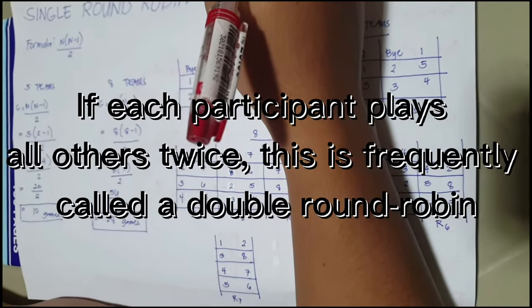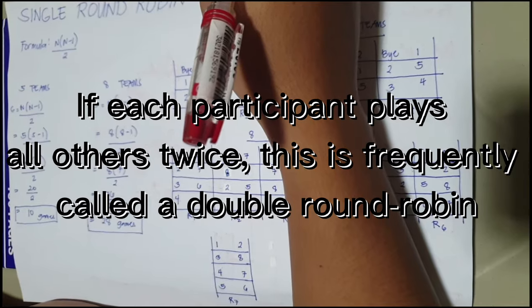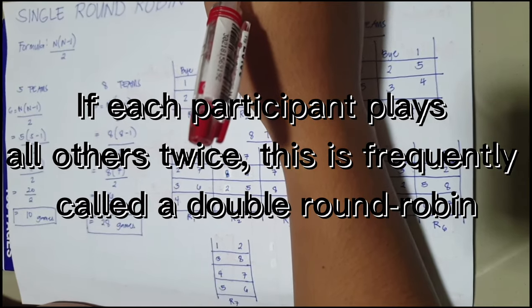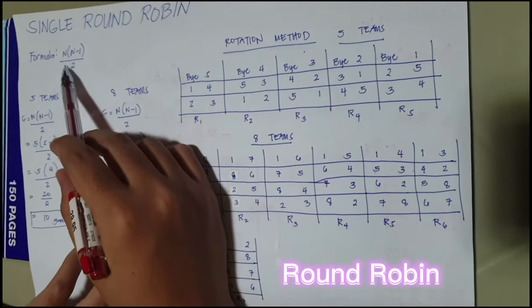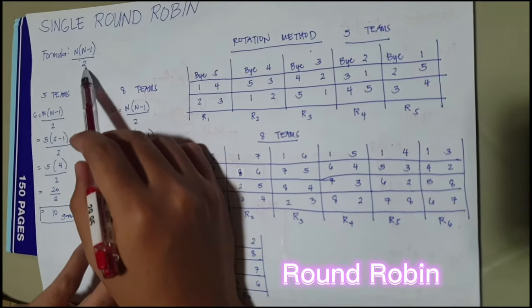If each participant plays all others twice, this is frequently called a double round robin. For the formula, we're going to use n times n minus 1 over 2.